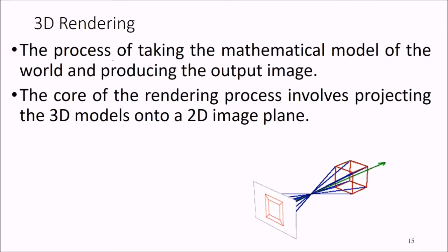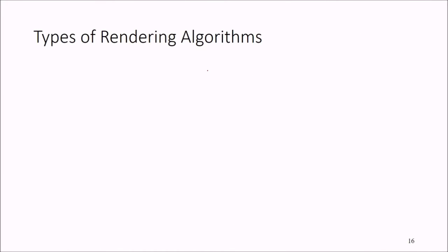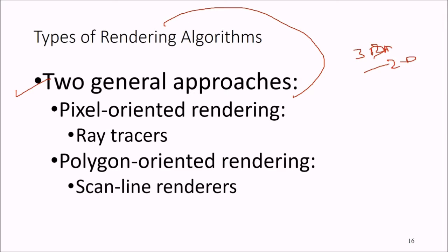Then comes 3D rendering — the process of taking the mathematical model of the world and producing the output image. The core of the rendering process involves projecting the 3D models onto the 2D image plane. There are certain types of rendering algorithms. General approaches include pixel-oriented rendering — for example, ray tracers — and polygon-oriented rendering.